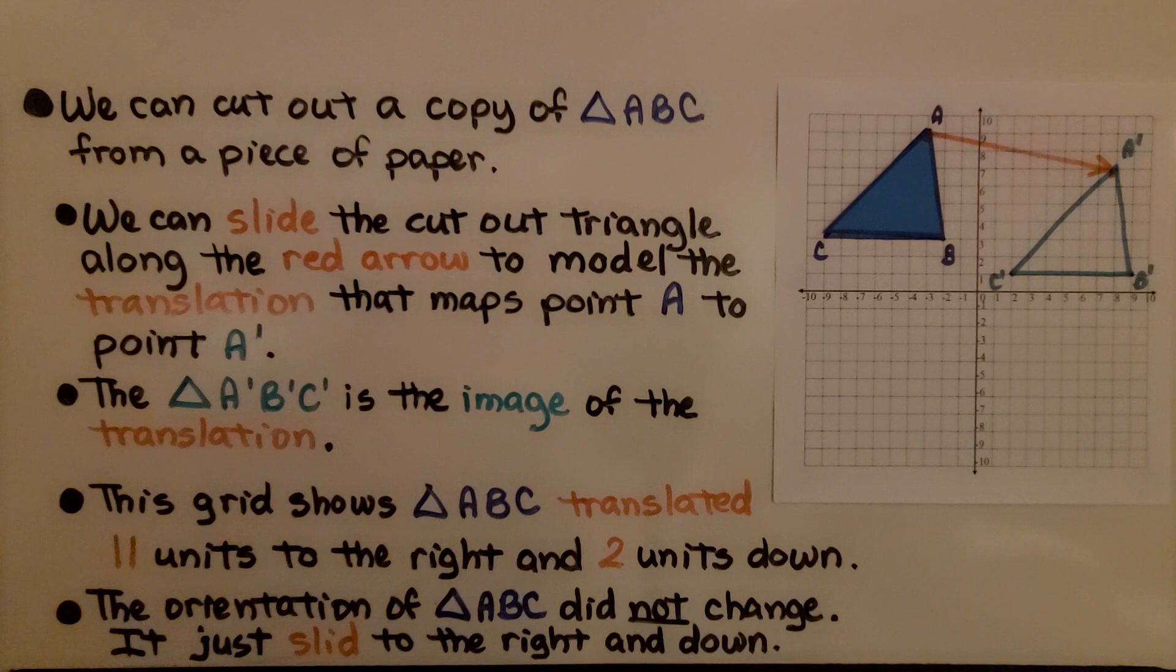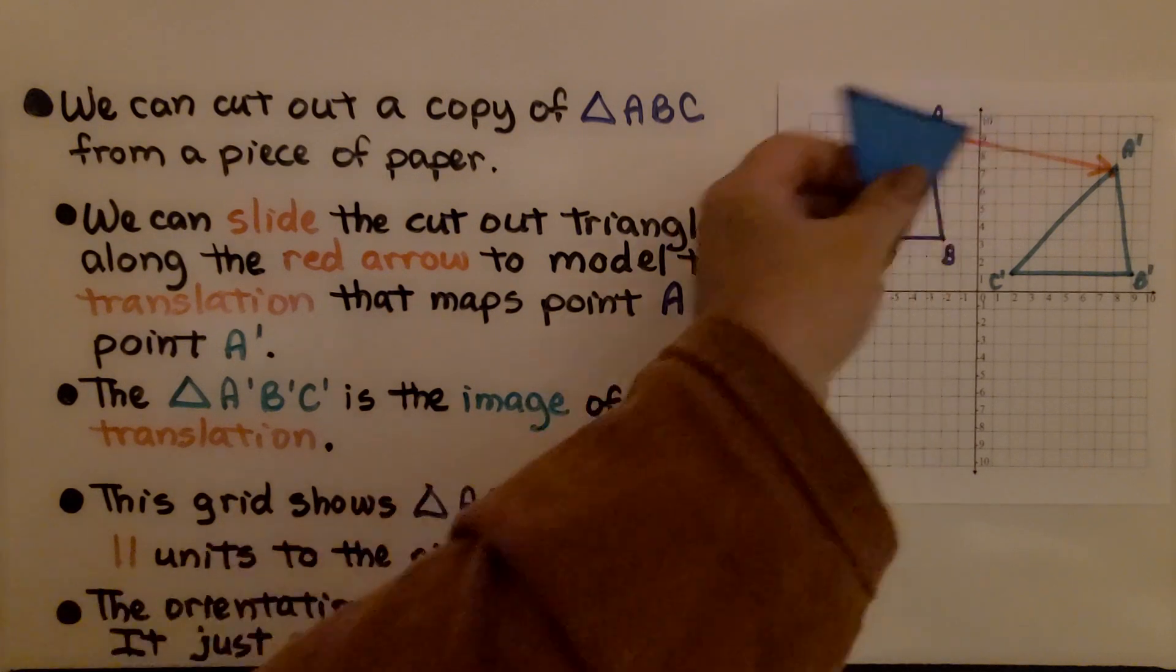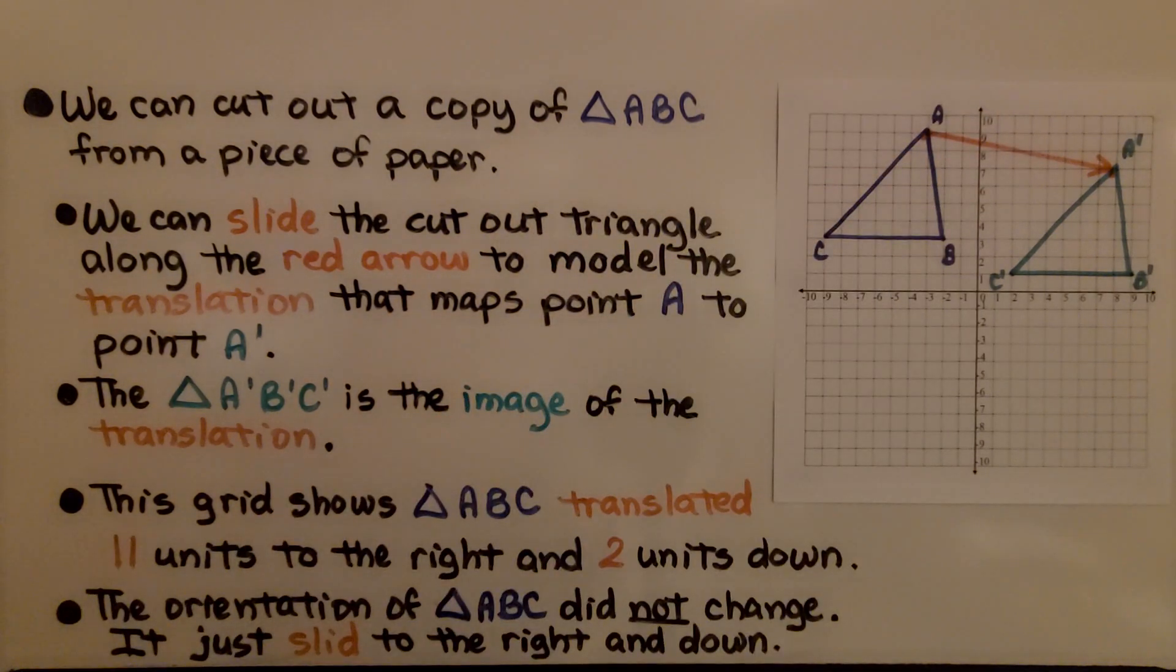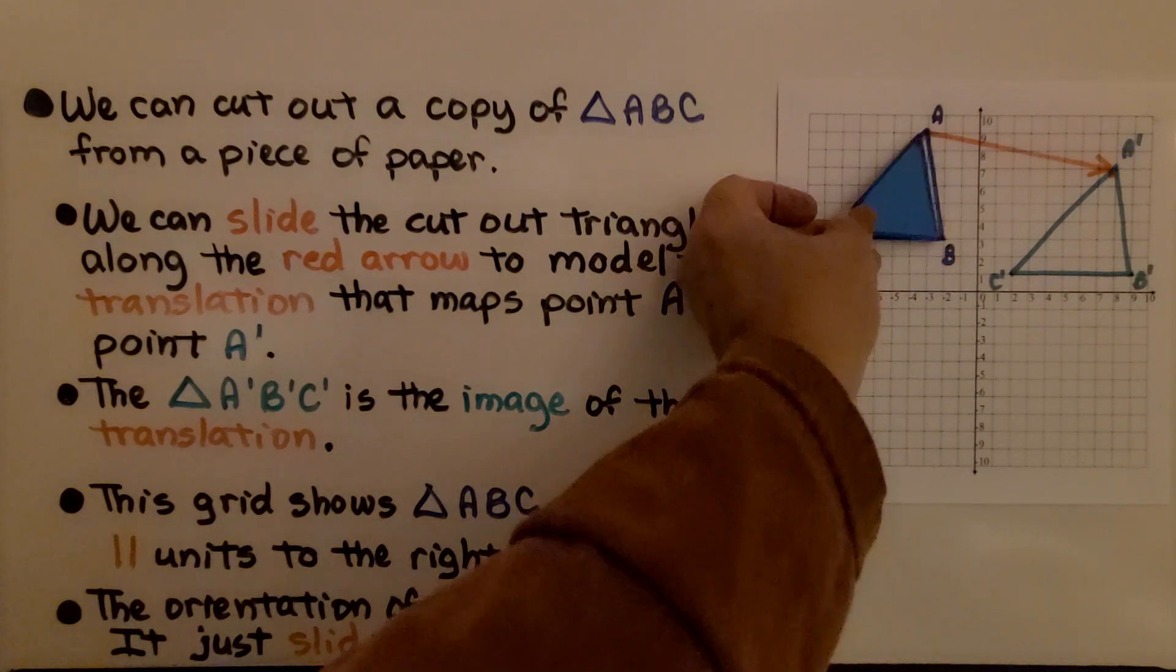We can cut out a copy of triangle ABC from a piece of paper. I've got my cutout—it fits right on there. See that? We can slide the cutout triangle along the red arrow to model the translation that maps point A to point A prime.